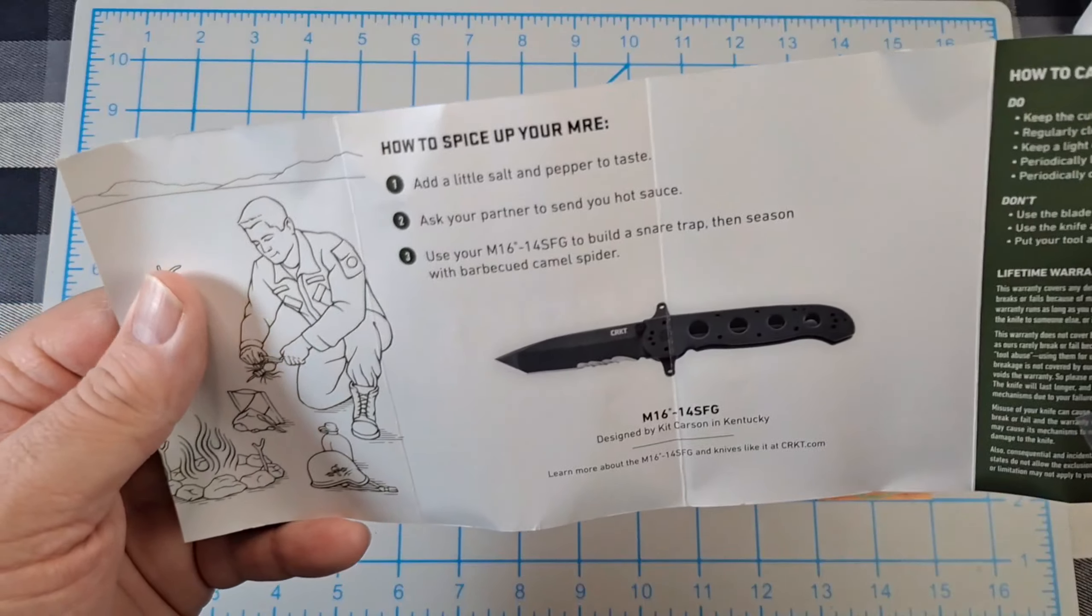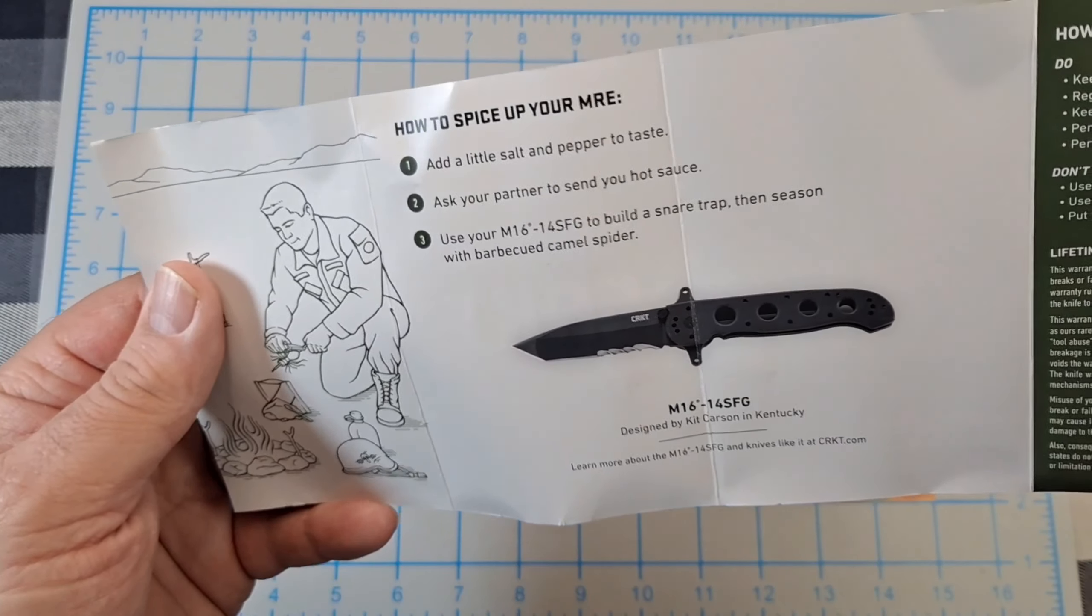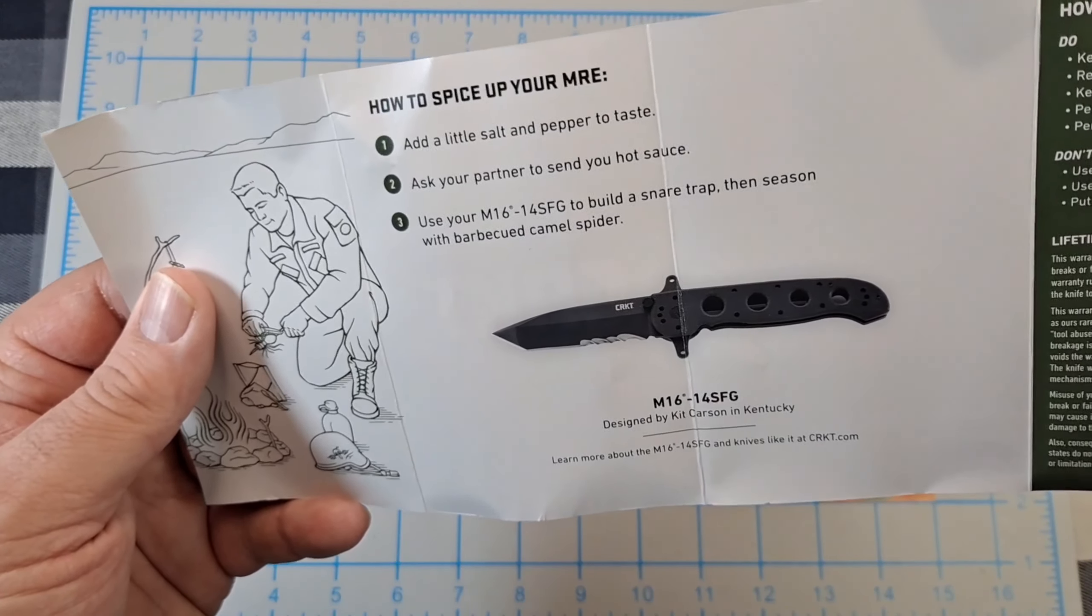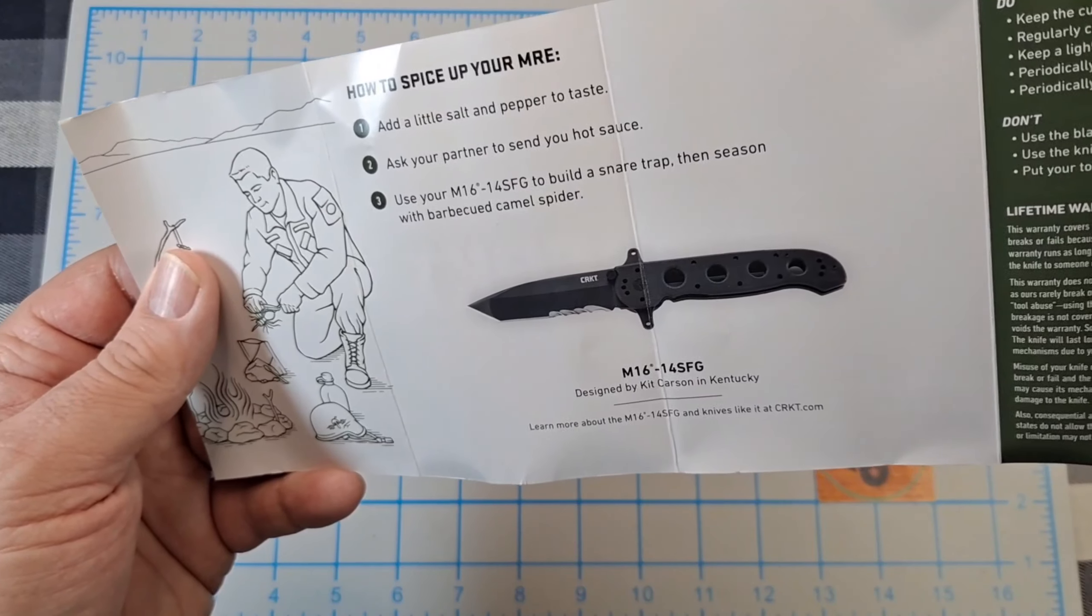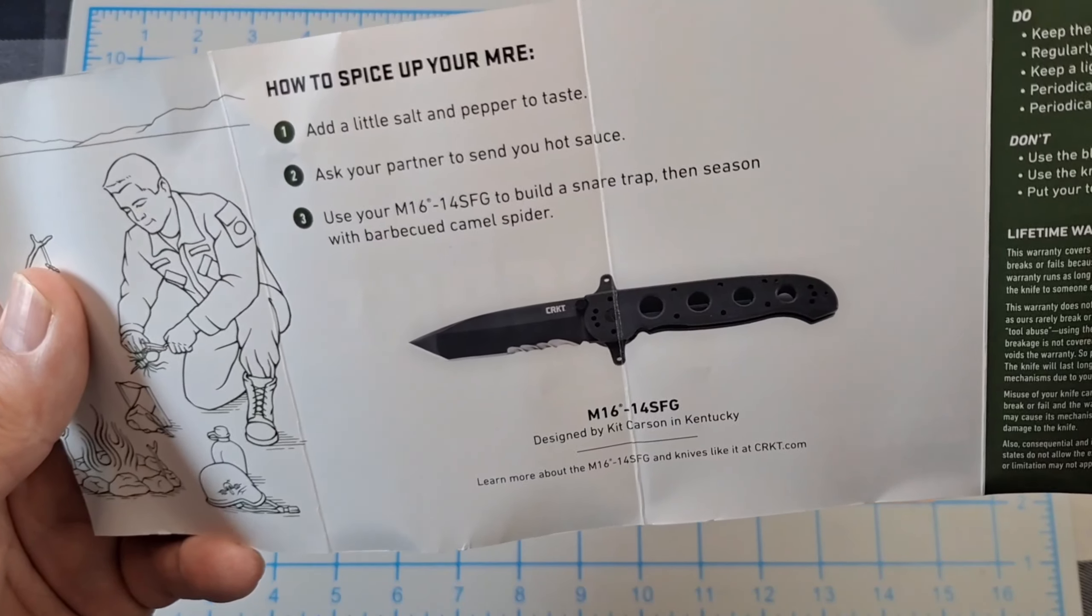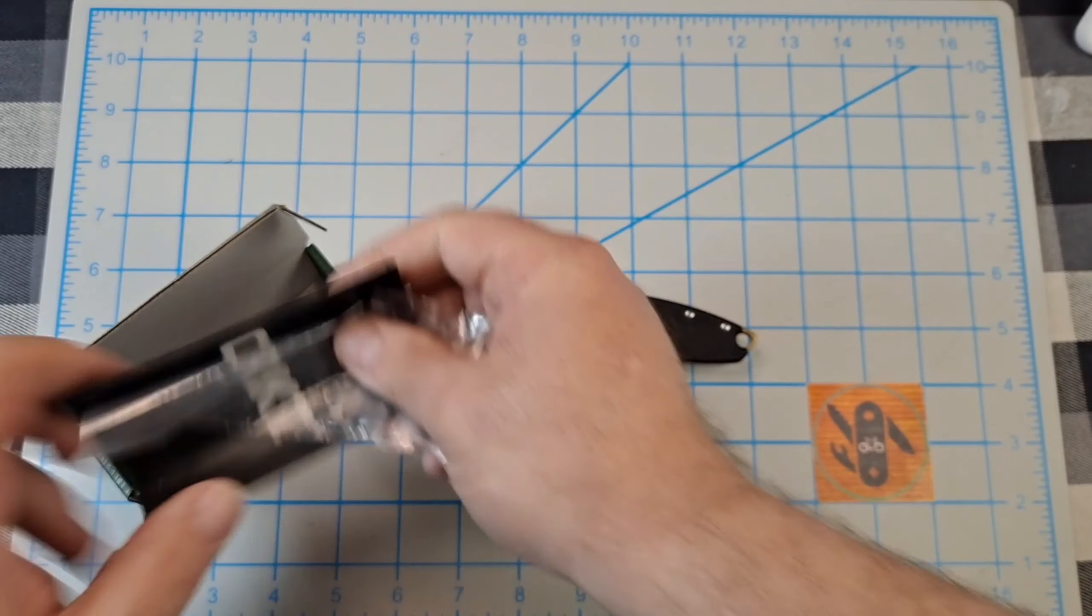This time it tells you how to spice up your MRE - add a little salt and pepper to taste, ask your partner to send you hot sauce, use your M16-14 SFG to build a snare trap seasoned with barbecue camel splitter. They're always kind of interesting to look at.